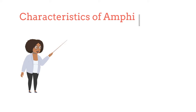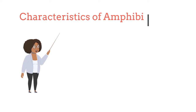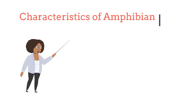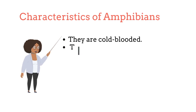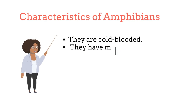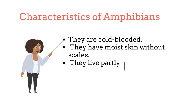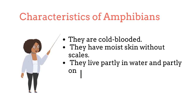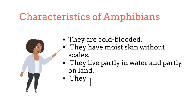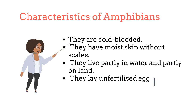The following are some characteristics of amphibians: they are cold-blooded, they have a moist skin without scales, they live partly in water and partly on land, and they lay unfertilized eggs.